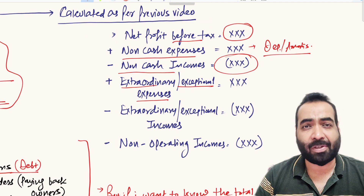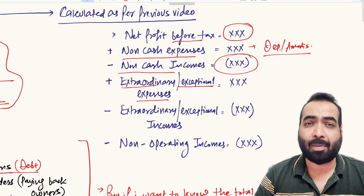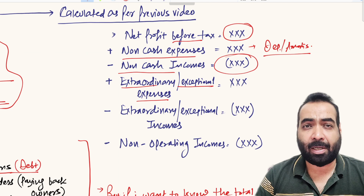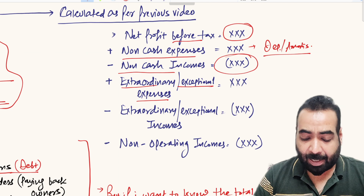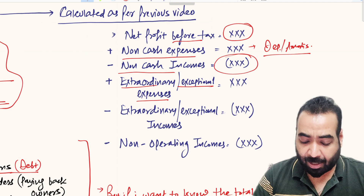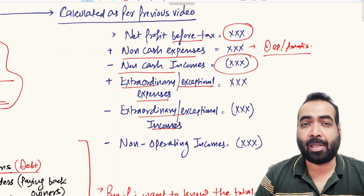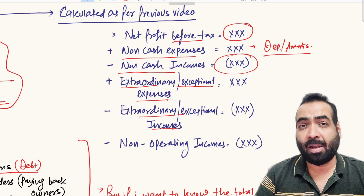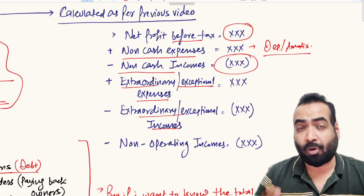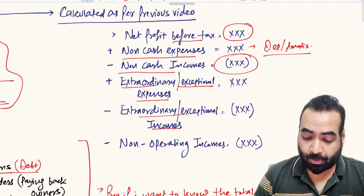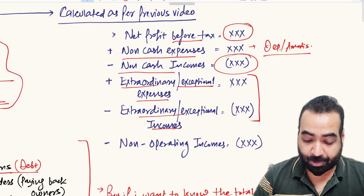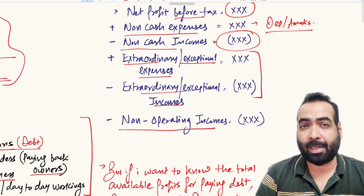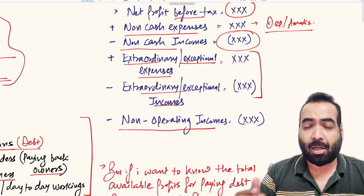EBITDA is a parameter used by equity shareholders, investors, and lenders to analyze the business accurately. We need to see the normal nature of business expenses. If there are any extraordinary or exceptional expenses or incomes, their effect needs to be removed from the profits so we can see the clear picture — the actual level of normal operating earnings generated by the business. Therefore, adjustment of extraordinary incomes and expenses is mandatory in EBITDA calculation.